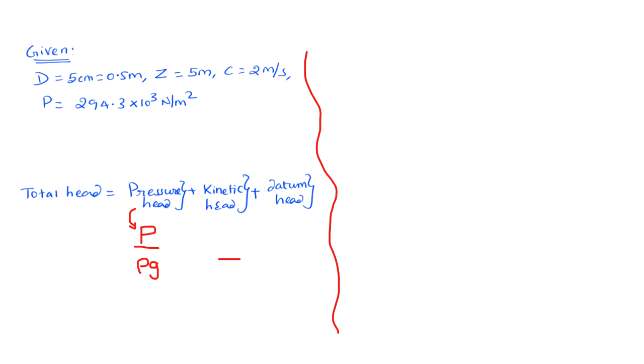Yeah. So what is the pressure head? The pressure head equation is p by rho g where p is the pressure, rho is the density and g is the gravity. Kinetic head is c square by 2g where c is the velocity. Datum head is just z. So all that we have to do is just substitute the values that we know in these equations. How simple this is, is it not? Yeah. It cannot get more simple than this.